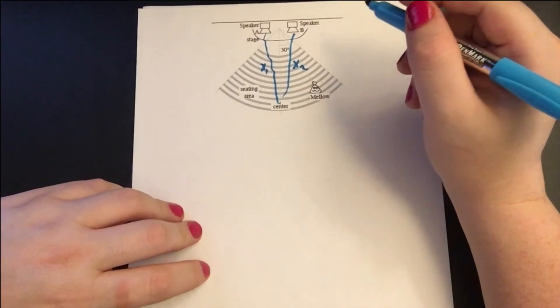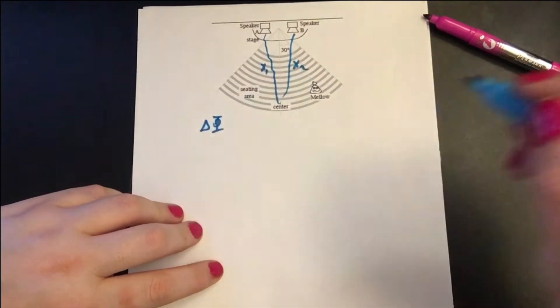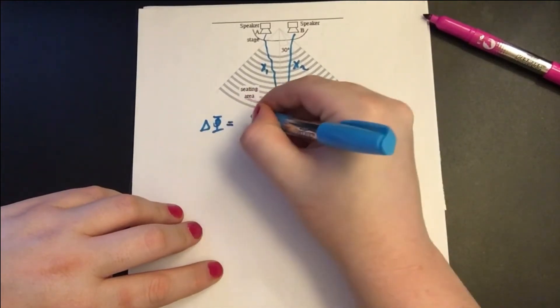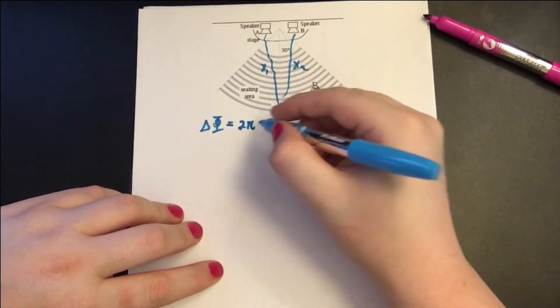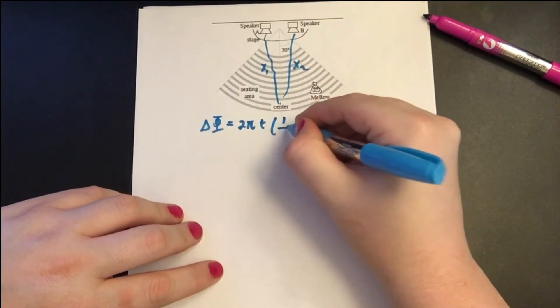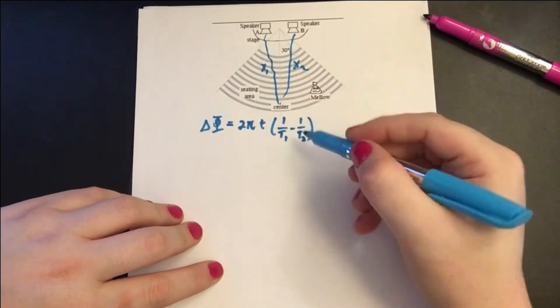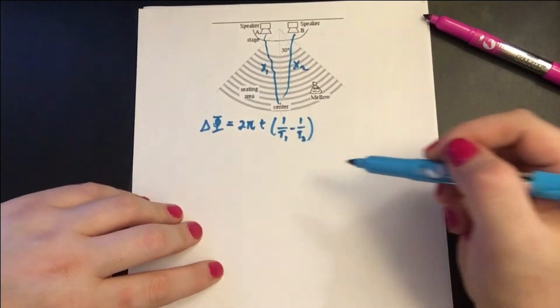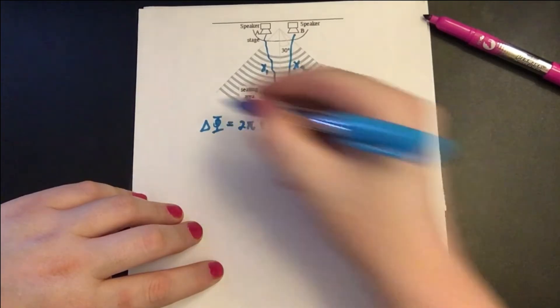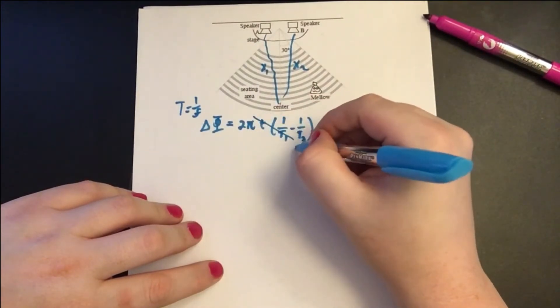So if we look at constructive or destructive interference, the equation is the change in phi. So if we look at the change in phi, 2π times some specific time point of each period T1 minus 1 over T2. We know that the periods should cancel out because it was given that they're the same frequency. And frequency and period are inversely related. Period equals 1 over the frequency. So this whole thing goes to 0.